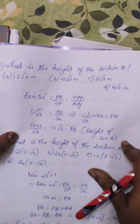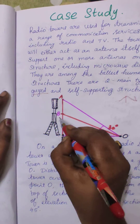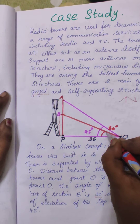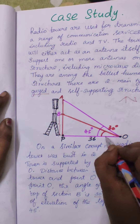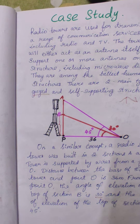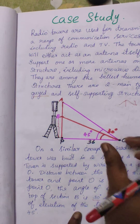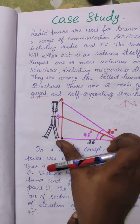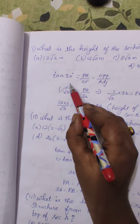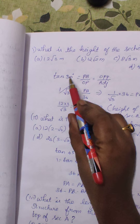The first question asks for the height of section B. To find this, we use the angle of 30 degrees. The trigonometric ratio connecting the known measure and the unknown measure is tan. So tan 30° equals opposite over adjacent. Here, for tan 30°, the adjacent side is 36 meters and the opposite side is PB. So tan 30° = PB / OP.